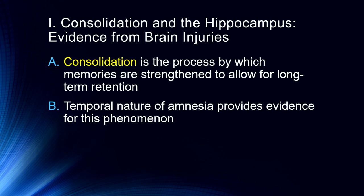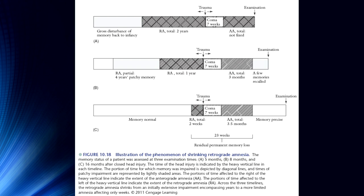The temporal nature of amnesia provides us with a lot of evidence for consolidation. A couple of lectures back we looked at shrinking retrograde amnesia: a patient had a severe head injury, was in a coma for seven weeks, and was followed for quite a period of time. In their first examination they had anterograde amnesia from the incident forward — about three months of lost memory following the injury — and a complete blank of the previous two years. In their second examination we start to see recovery. A head injury disrupts many processes while the brain is busy healing, with a lot of inflammation preventing those processes from resolving.